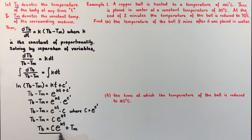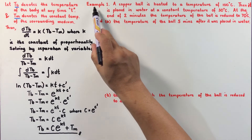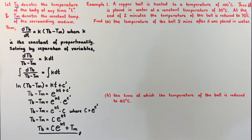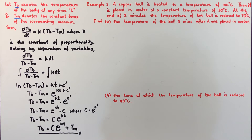This is the mathematical representation of Newton's Law of Cooling. To understand this formula, let us apply it to Example 1: A copper bowl is heated to 100 degrees Celsius, then placed in water at a constant temperature of 30 degrees Celsius. At the end of 2 minutes, the temperature of the bowl is reduced to 70 degrees Celsius. Find the temperature of the bowl 5 minutes after it was placed in water.